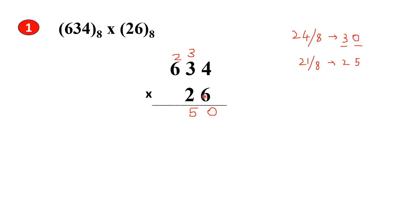Next, multiply 6 with 6. 6 into 6 is 36, plus 2 is 38. 38 is not an octal number. To make it octal, divide by 8. We get 4 as the quotient and 6 as the remainder. Put 6 here as the sum and 4 as the carry. You can write the carry here itself.